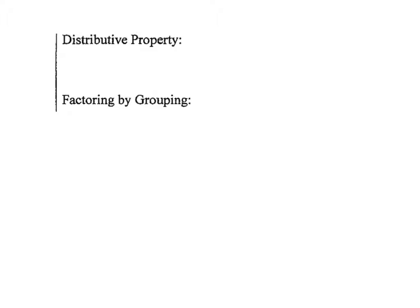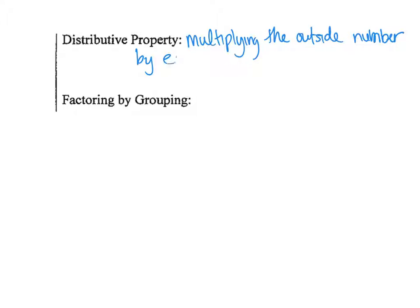The first thing we need to do is some definitions. I know that you know the distributive property — our basic definition that we've talked about is multiplying the outside number by each number inside the parentheses.